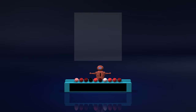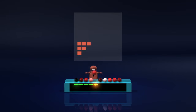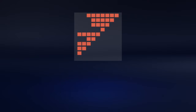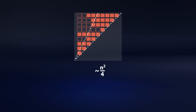Now we'll draw the same chart for Insertion Sort. Insertion Sort starts with the shortest iteration, and they gradually get longer. But it doesn't bother running each iteration all the way — it stops when it finds the correct spot for the newly added element, which on average happens in the middle. Therefore, the number of comparisons here is approximately n-squared divided by 4.